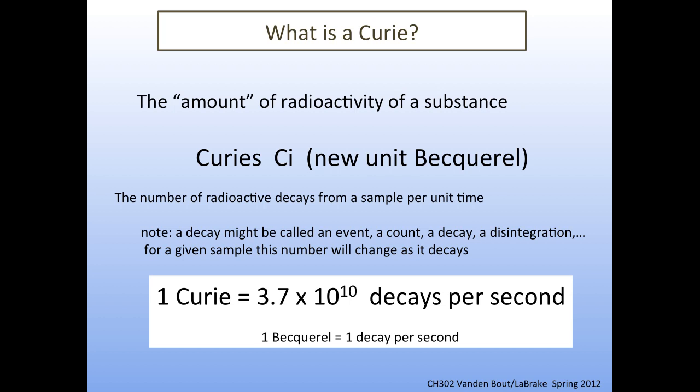The new unit, which is not often used, is the Becquerel. The Becquerel makes a lot more sense — it's simply one decay per second. So something that has a million Becquerels is decaying a million times a second. That's how you describe how much radioactivity there is in a given sample.